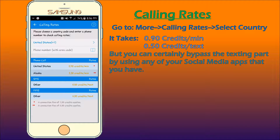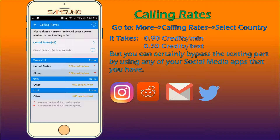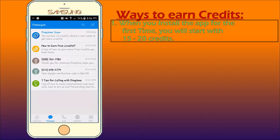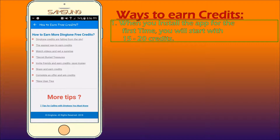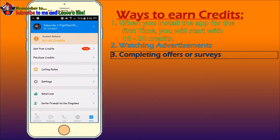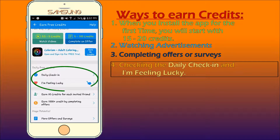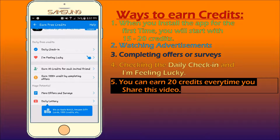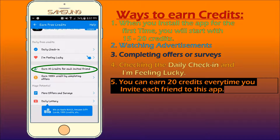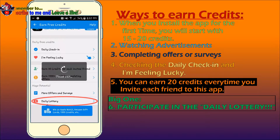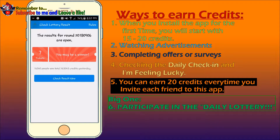Obviously you can bypass the texting part by using Instagram or other social media that you have. Now, there are multiple ways to get credits. First off, when you install the Dingtone app for the first time, you can earn 15 to 20 credits. You can also earn credits by watching advertisements or completing offers. You can get credits by checking both the daily check-in and I'm Feeling Lucky. You actually earn 20 credits by inviting each friend to this app. And finally, this big one is earning credits by participating in the daily lottery. Test your luck — you might be surprised by what you'll get or earn.